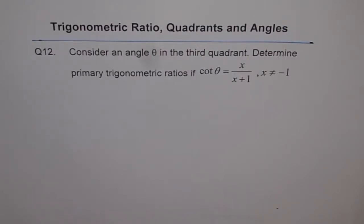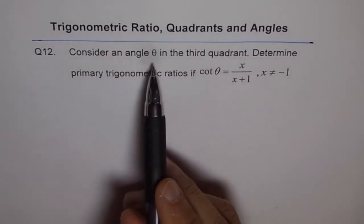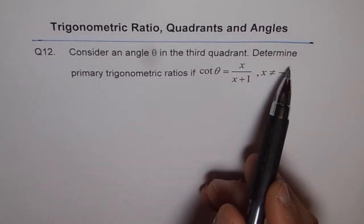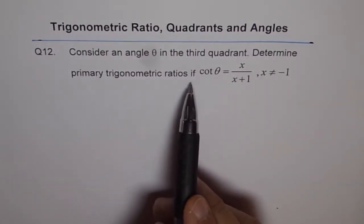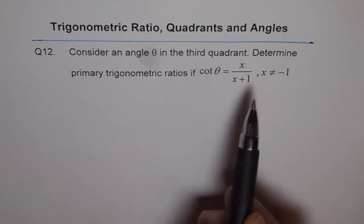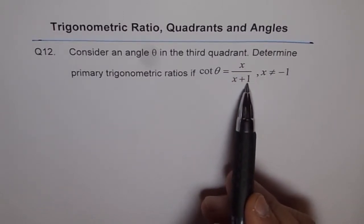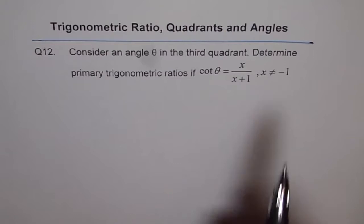Trigonometric Ratio, Quadrants and Angles Question 12. Consider an angle theta in the third quadrant. Determine primary trigonometric ratios if cotangent theta equals x over x plus 1 where x is not equal to minus 1.